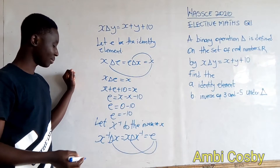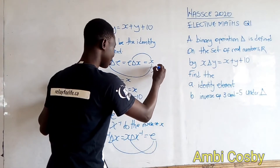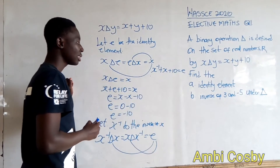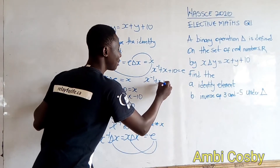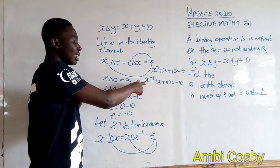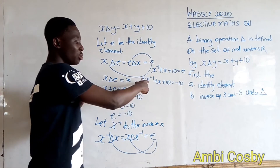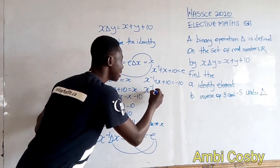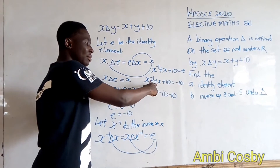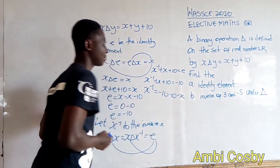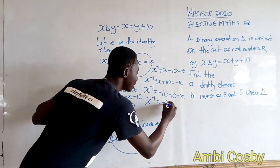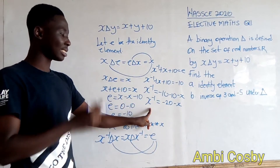Fixing x ∗ x⁻¹ into the equation gives x⁻¹ + x + 10 = -10. We want x⁻¹, so we bring x and 10 to the other side: x⁻¹ = -10 - 10 - x, which gives x⁻¹ = -20 - x. This is the equation for the inverse.